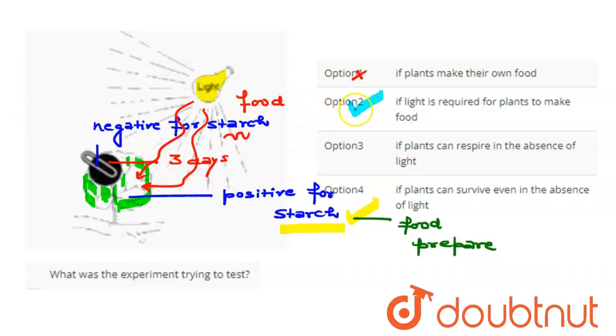Second option: if light is required for plants to make food. So here is the answer. This test was done to check whether light is necessary for plants to make their food or not.